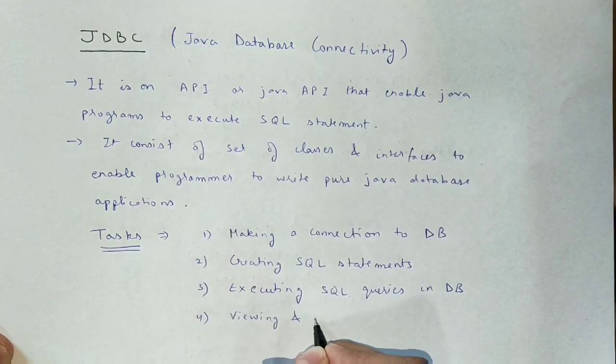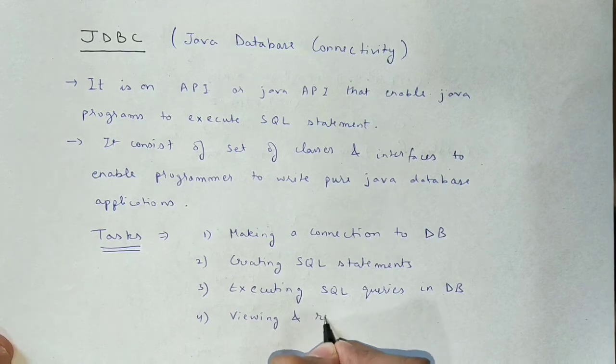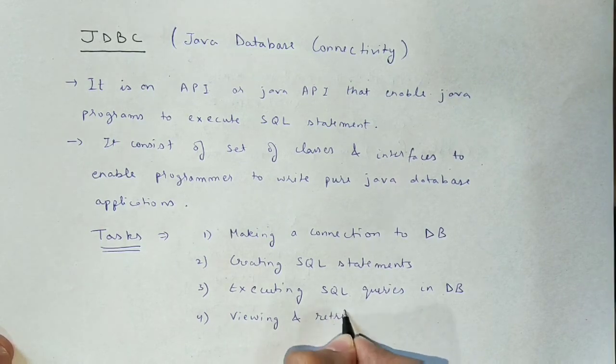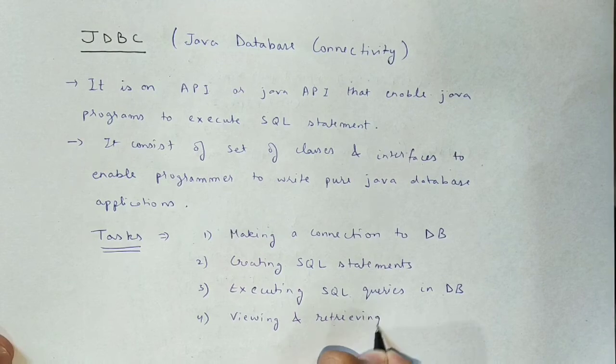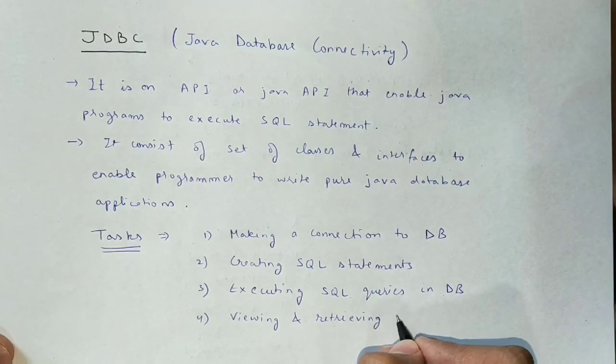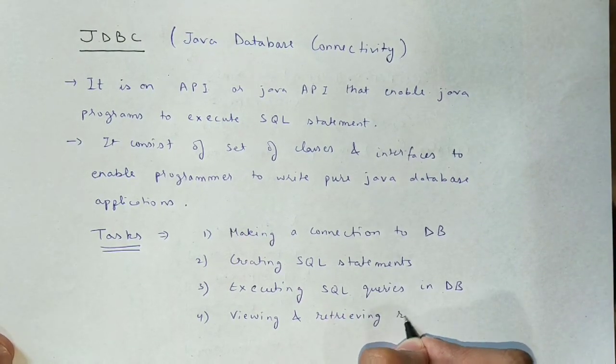JDBC API defines how an application open a connection, communicate with the database, execute SQL statements and retrieve query results.